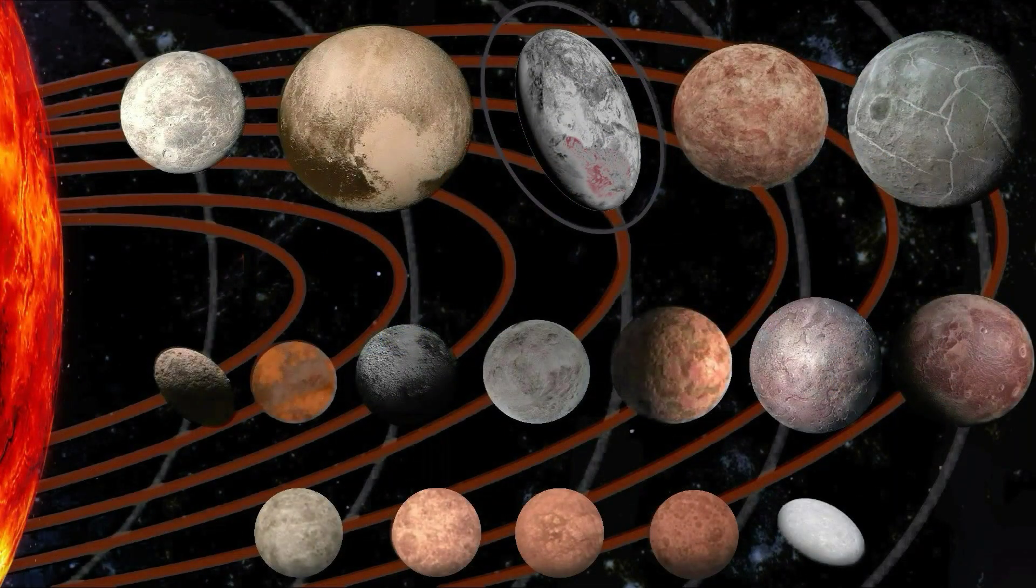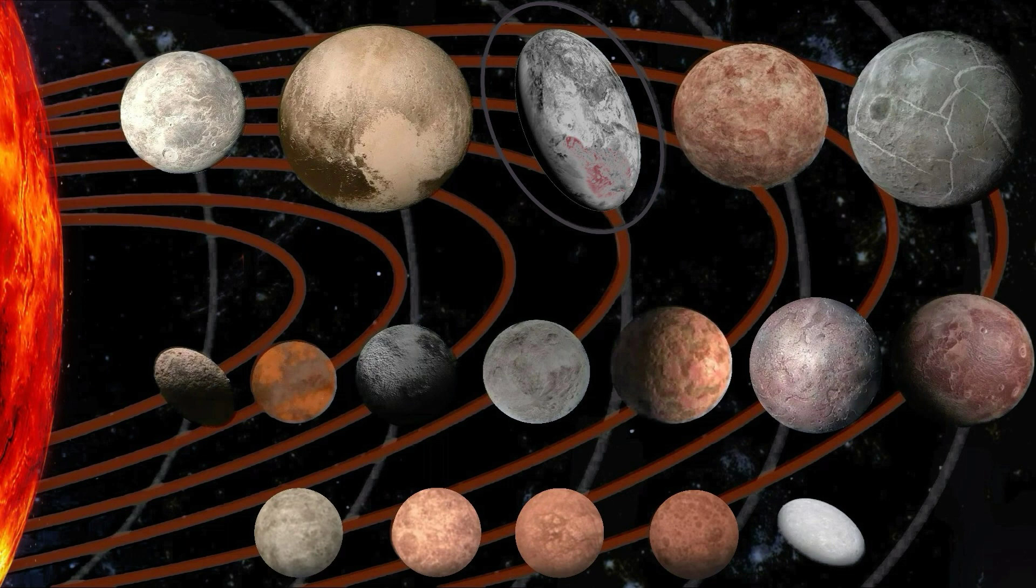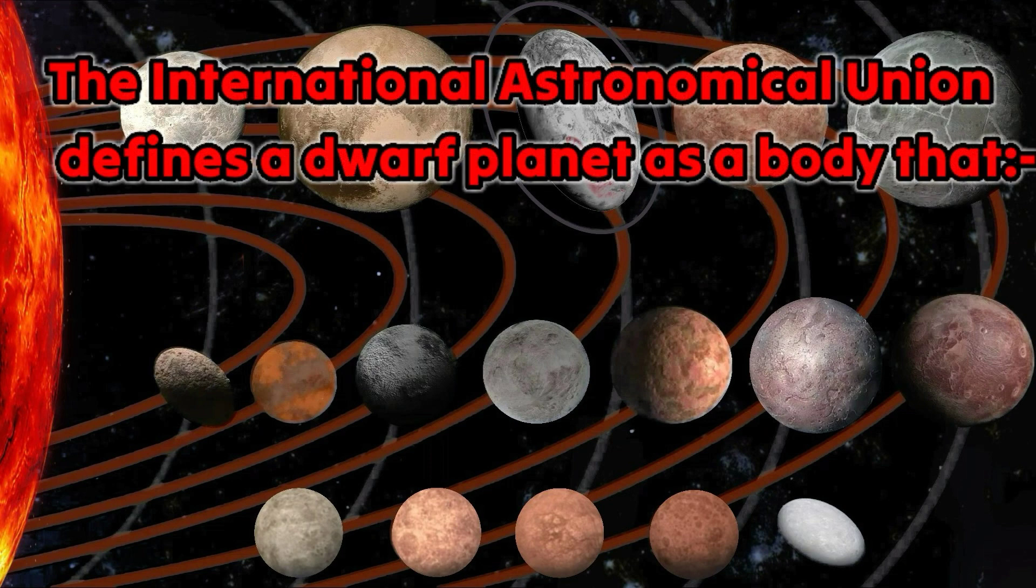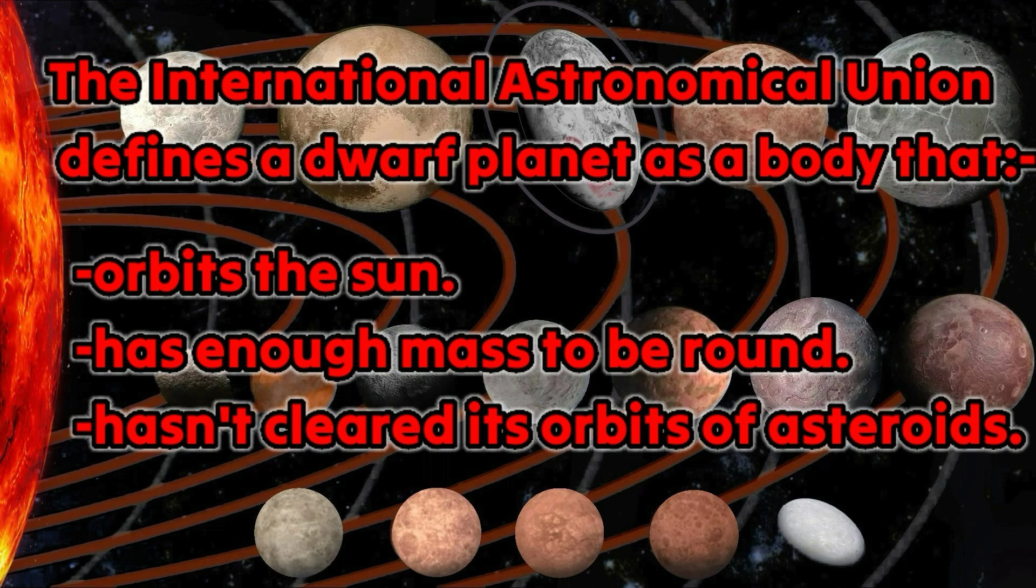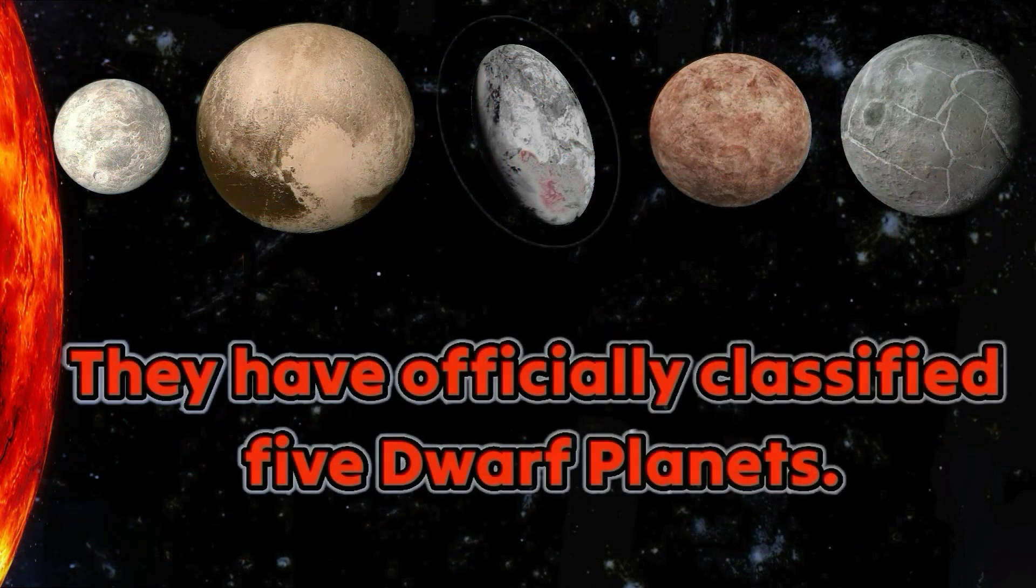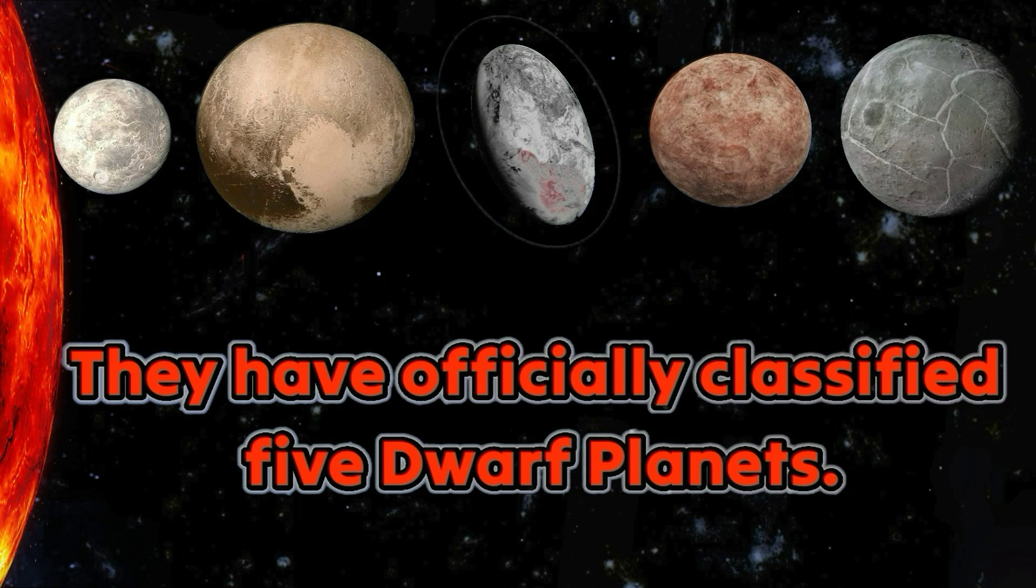Now we will learn the dwarf planets, but let's first understand the difference between the eight normal planets and the dwarf planets. The International Astronomical Union defines a dwarf planet as a body that orbits the Sun, has enough mass to be round, hasn't cleared its orbit of asteroids. They have officially classified five dwarf planets. So let's learn them together.